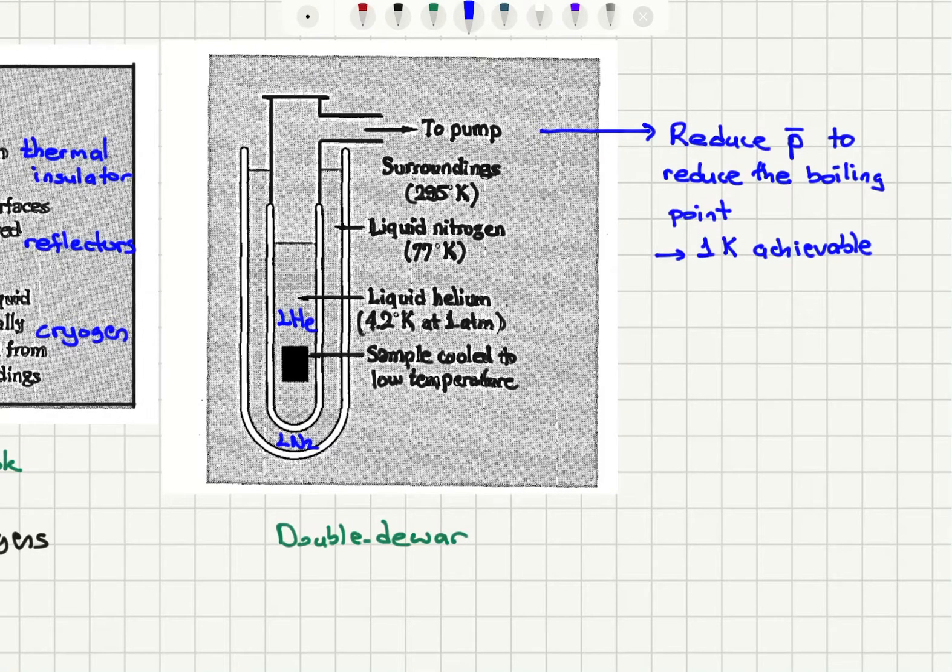Another trick you can use is instead of using helium-4, if you use a helium-3 isotope that has a slightly lower boiling point compared to helium-4, and we also pump on this helium-3, we can go down to 0.3 Kelvin easily.